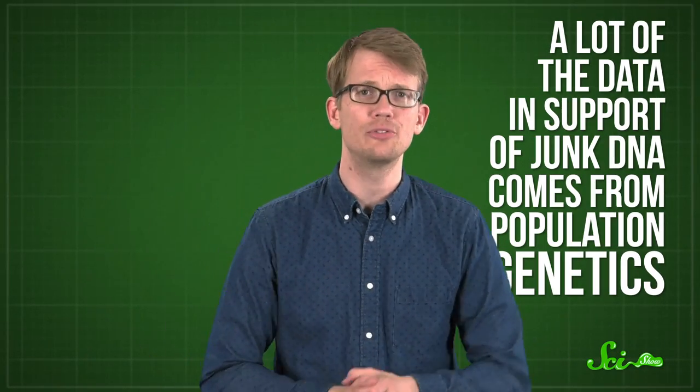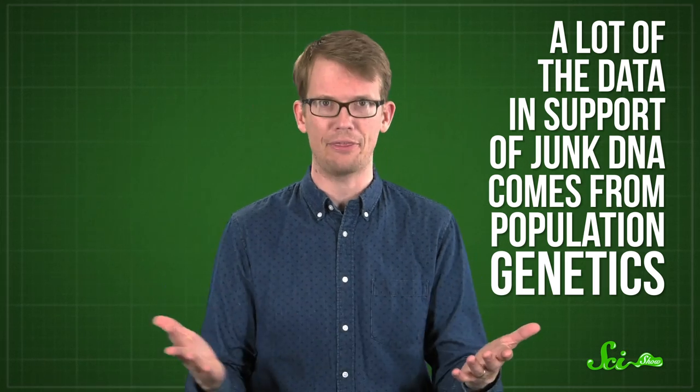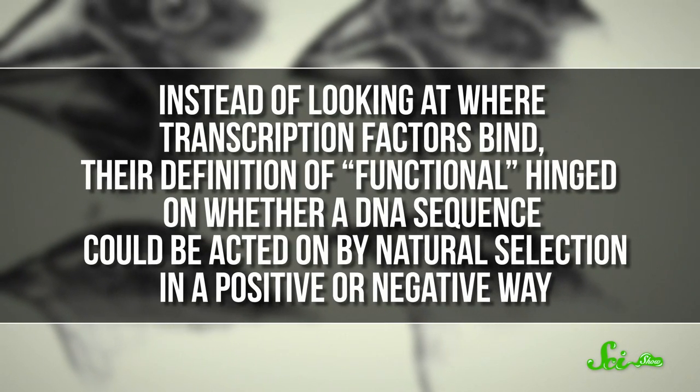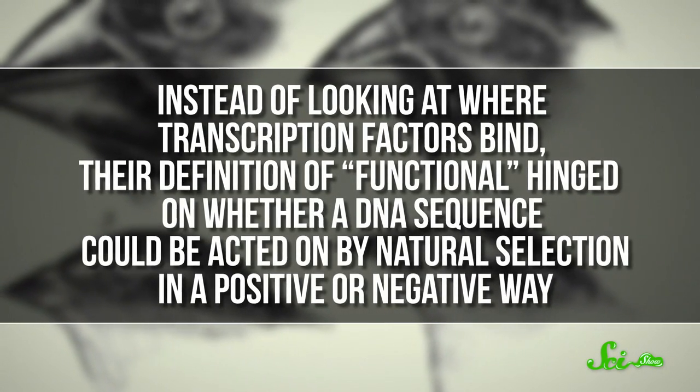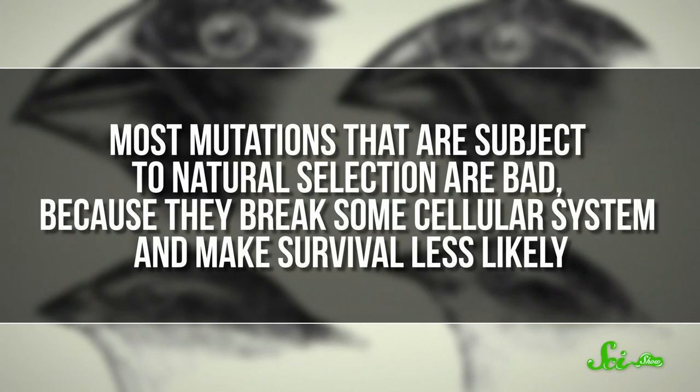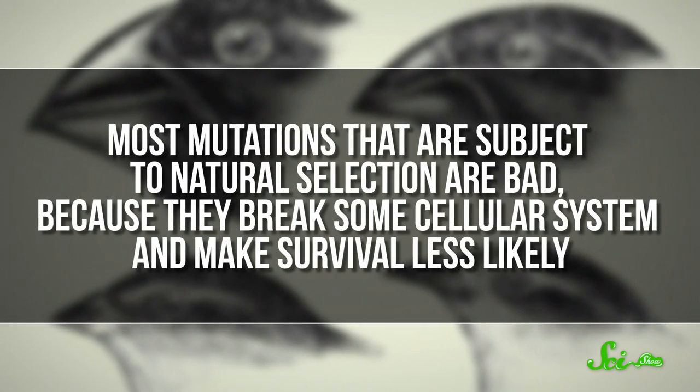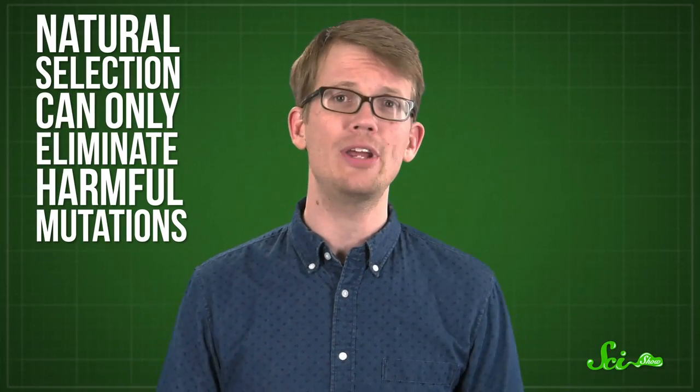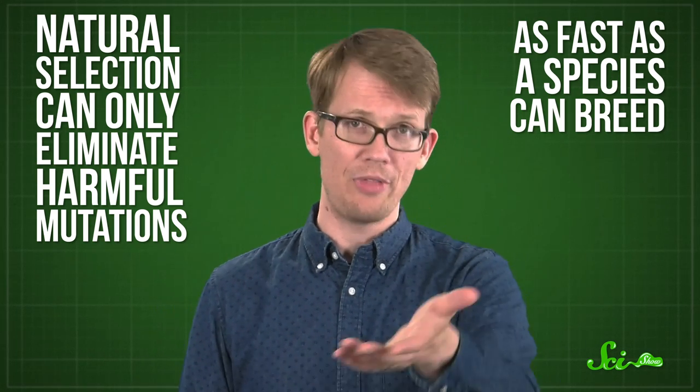Overall, a lot of the data in support of junk DNA comes from population genetics, which involves a lot of math. Big one paper published in 2017 in the journal Genome Biology and Evolution. Instead of looking at where transcription factors bind, their definition of functional hinged on whether a DNA sequence could be acted on by natural selection in a positive or negative way. Most mutations that are subject to natural selection are bad, because they break some cellular system and make survival less likely. The study's author estimated the rates that harmful mutations build up in humans compared to our rate of reproduction and effective population size. That's a statistical term that refers to how much of the population is finding mates and making babies. Basically, natural selection can only eliminate harmful mutations as fast as a species can breed, or they would slowly die out.